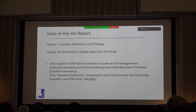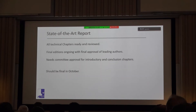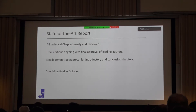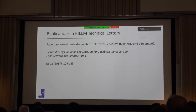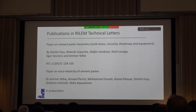We want to focus on the definition of interface rheometry because historically this part of our science has been described as tribology — incorrectly — since tribology is the science of friction and we didn't really have friction in this context. As for the current status: all technical chapters (2 through 7) have been reviewed by the committee, additions are ongoing, and we're waiting on final approval from chapter leaders. Introduction and conclusion chapters still need committee approval but should be finalized in October. We also have a second RILEM technical letter paper in preparation on viscoelasticity of cement-based materials.